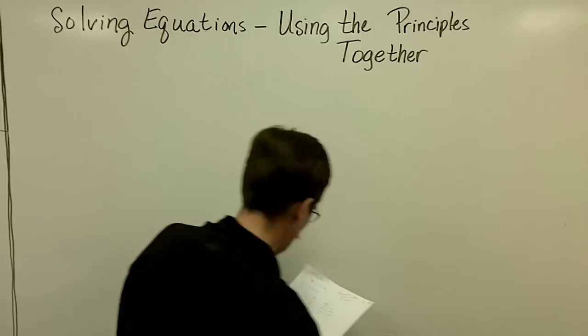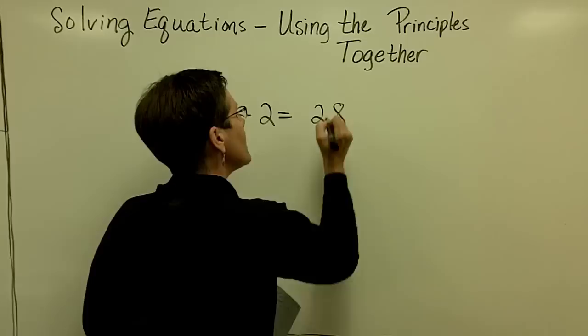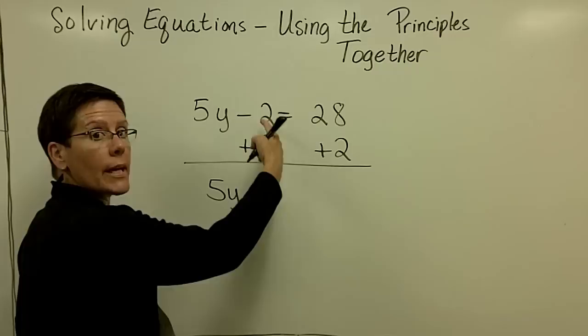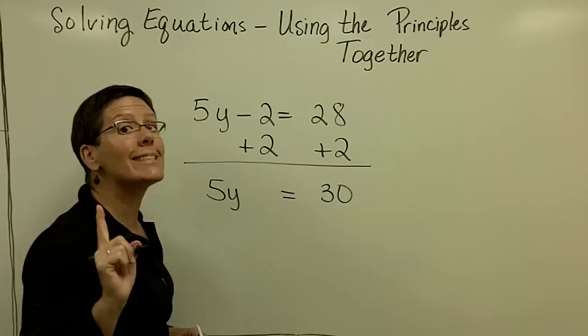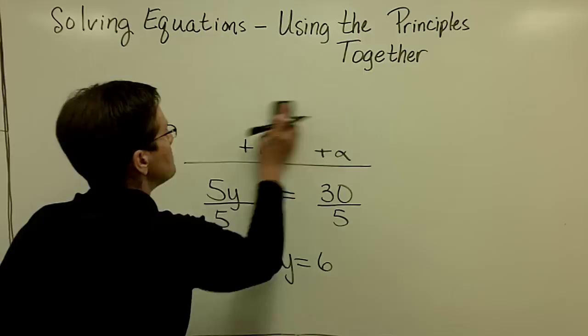Let's look at another one, very similar. If I have 5y minus 2 equals 28, I'm going to try to get the term with y in it all by itself. So I'm going to add 2 to both sides of this equation, and then the 5y will be all alone, and the right side, 28 plus 2, is 30, and now I use the multiplication principle. I'll divide both sides by 5, and find my solution to this problem is y is equal to 6.